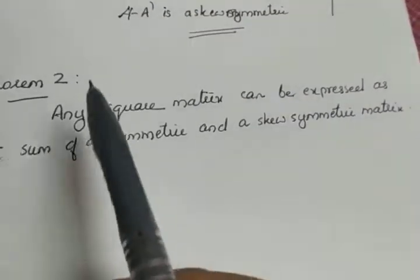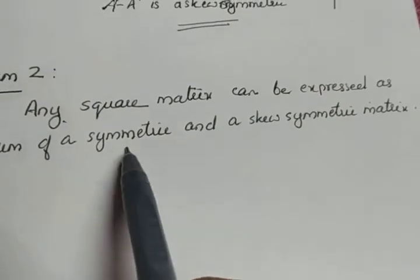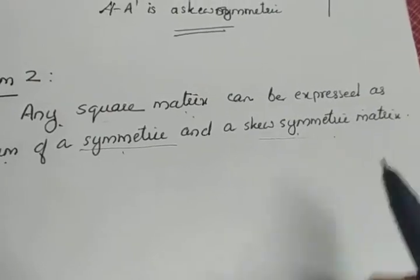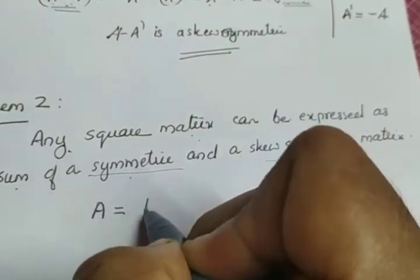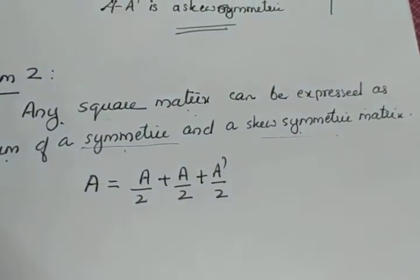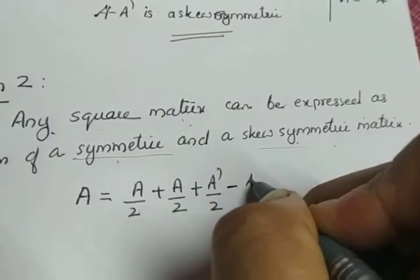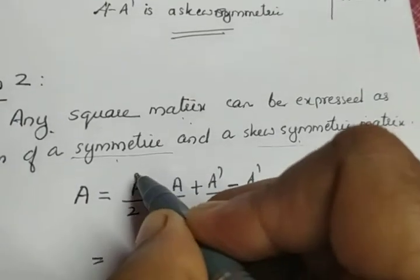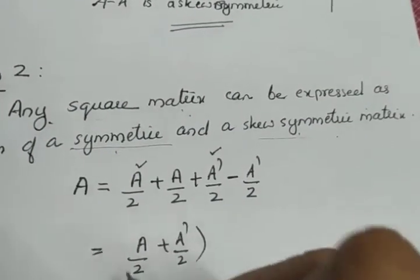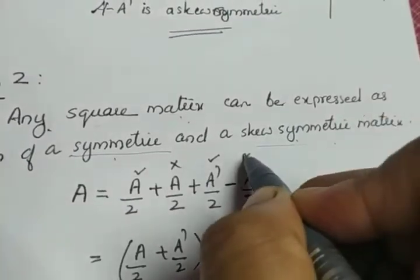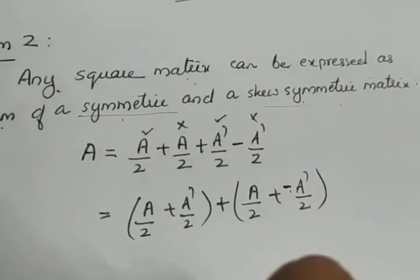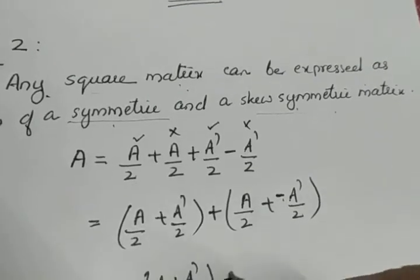We have another theorem: any square matrix can be expressed as a sum of a symmetric and a skew-symmetric matrix. For proving that, we can write A as A/2 plus A/2. Then add A transpose by 2 and subtract A transpose by 2 to balance the equation. Grouping: (A/2 plus A transpose/2) and (A/2 minus A transpose/2).